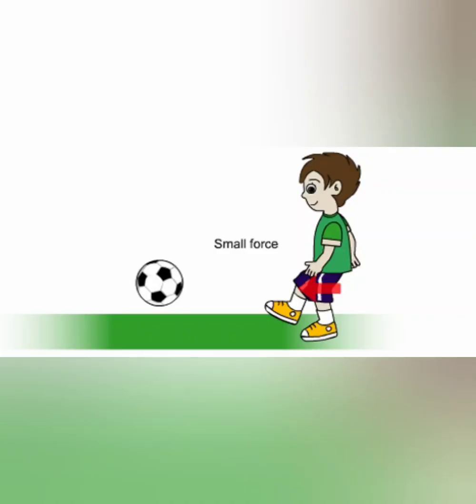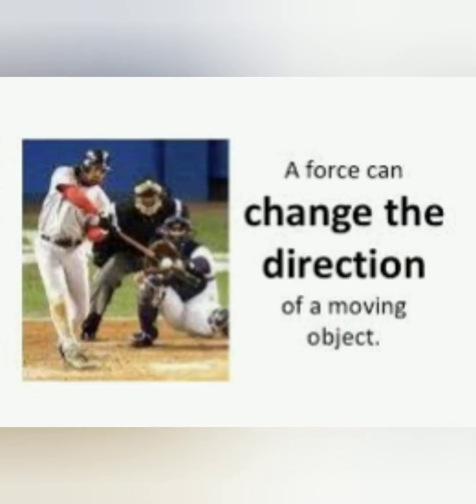Force can also change the speed of a moving object. What happens when we kick a rolling ball? Its speed increases. While playing cricket, we hit the ball bowled by the bowler, thus changing its speed and direction too. Force can change the direction of any moving object — when we obstruct the path of a ball, it bounces back and starts moving in a different direction.